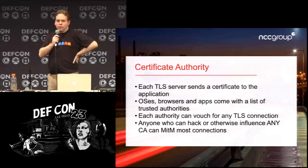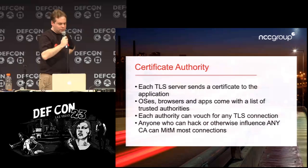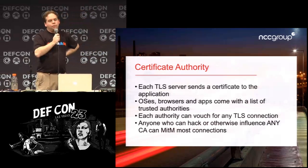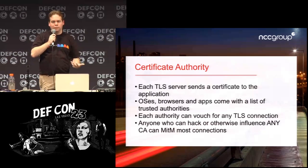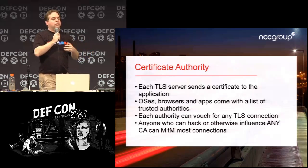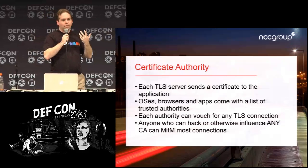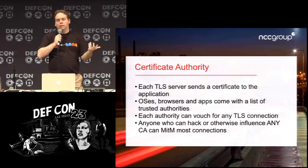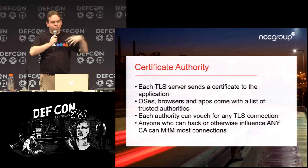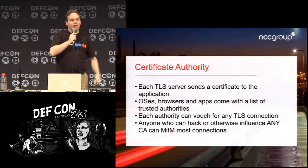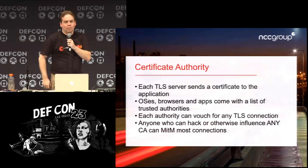When you make a TLS connection, the server sends you a certificate — essentially a list of identifying information, signed by a certificate authority. Your browser or OS has a list of all the CAs it trusts. If the certificate was signed by a trusted CA, that CA is vouching for the server's identity. The problem is there are many CAs and all of them can vouch for anyone. Firefox had 90 different CAs — everything from private U.S. businesses to the Hong Kong Post Office. A government might forge a certificate and inject it to man-in-the-middle you.